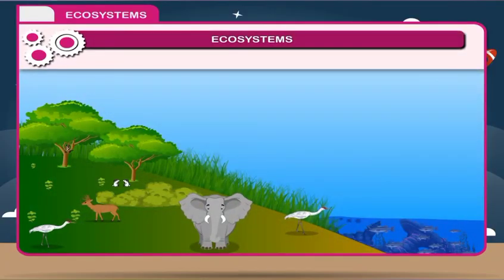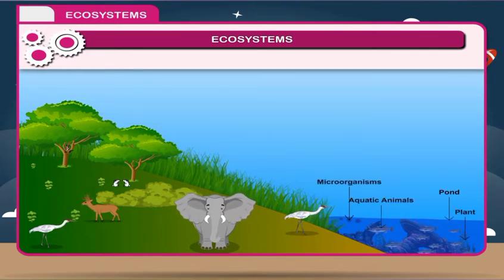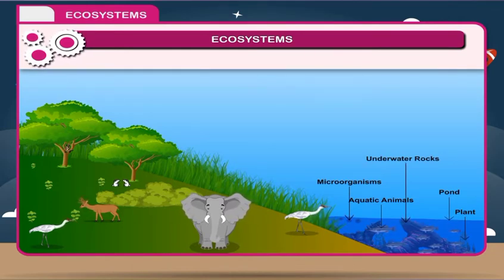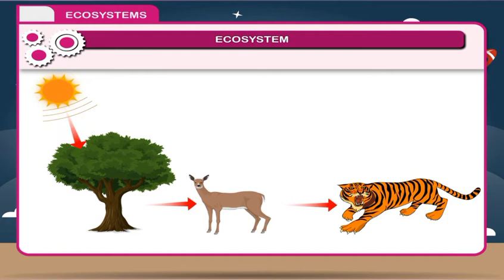Ecosystems. If you observe minutely in your surroundings, you will find that all things in our environment depend on each other for their existence. For example, a pond contains varieties of plants and aquatic animals, microorganisms, underwater rocks, etc. These all cannot live separately and therefore depend on each other. An ecosystem can be defined as the interdependence of plants and animals with their environment, constituting a biological community and the physical environment associated with it.